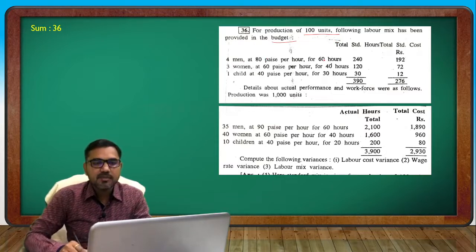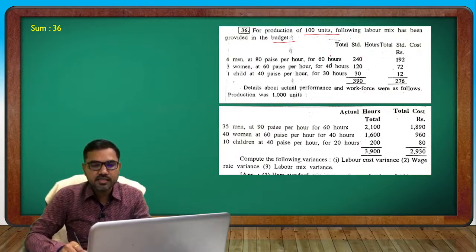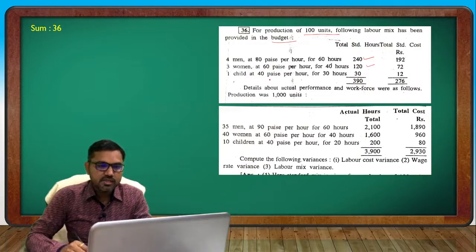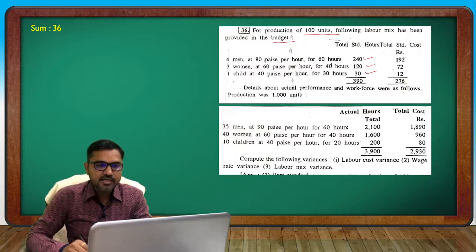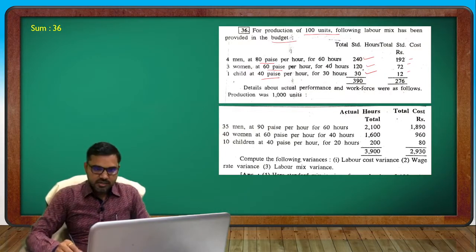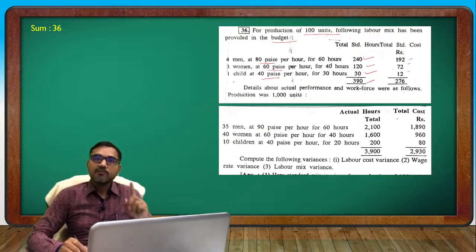Standard for men: 80 paise per hour, 60 hours. 4 men: 240 hours total. 3 women: 40 hours each = 120 hours. 1 child: 30 hours at rate 80, 60, 40. Total standard hours: 390 for 100 units.